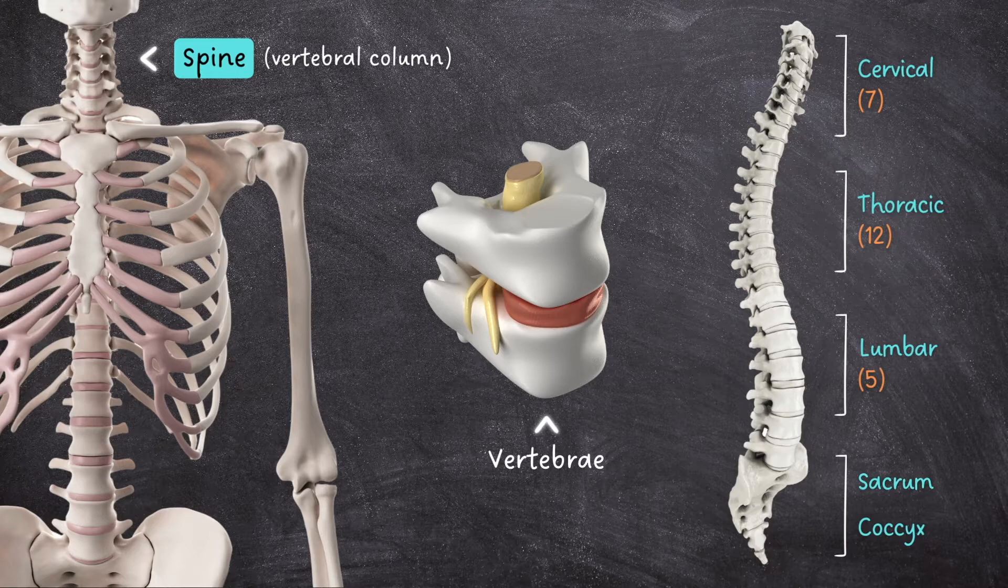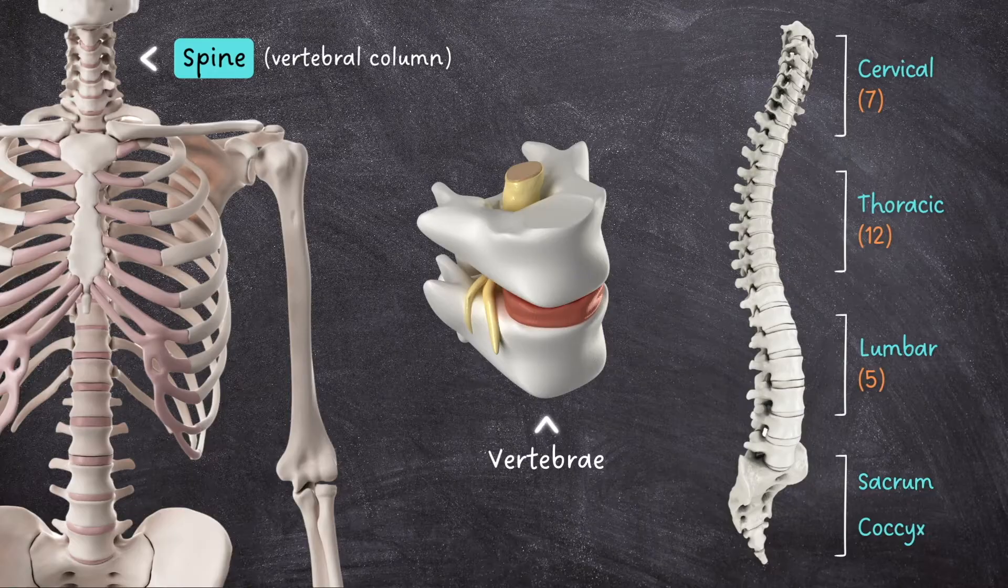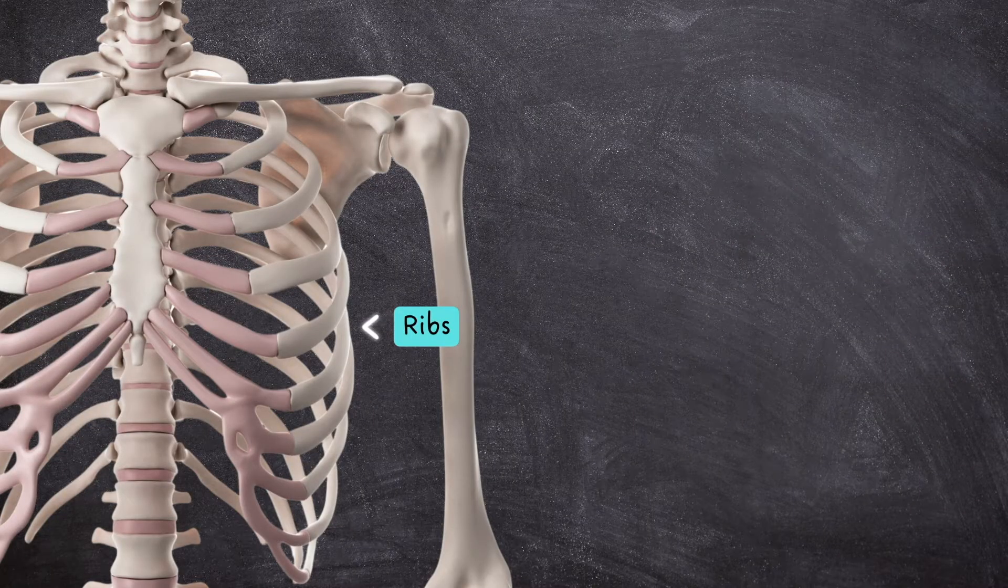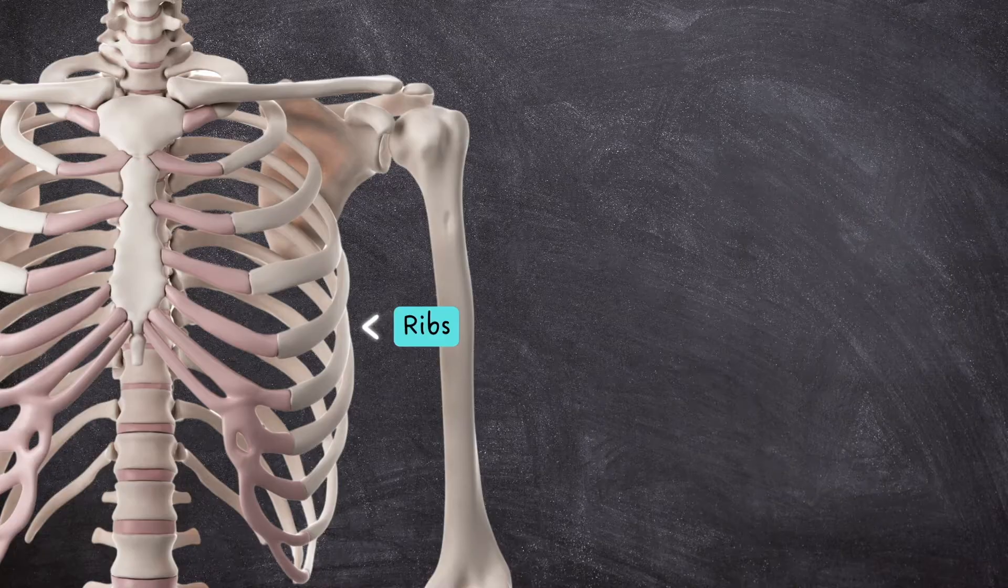The spine is divided into cervical, thoracic, and lumbar portions and includes the sacrum and coccyx. The ribs are flat bones that protect the lungs and heart that sit within the thoracic cavity or chest.